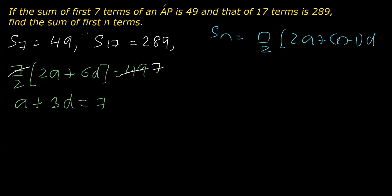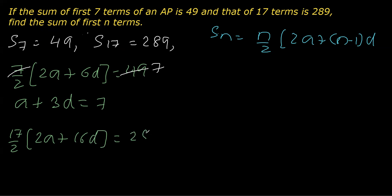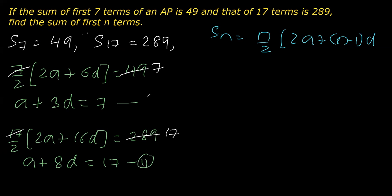Similarly, I can resolve the other one. For the sum of first 17 terms, I replace n with 17: 17 over 2 bracket 2a plus (n minus 1), and 17 minus 1 is 16, so 16d equals 289. I reduce 17 and take 2 common, and we get a plus 8d equals 17. This is the second equation.